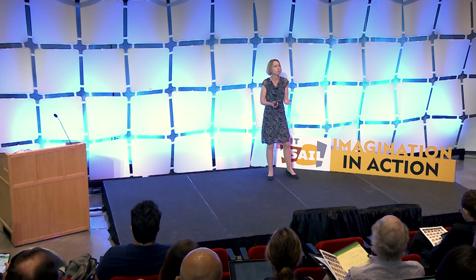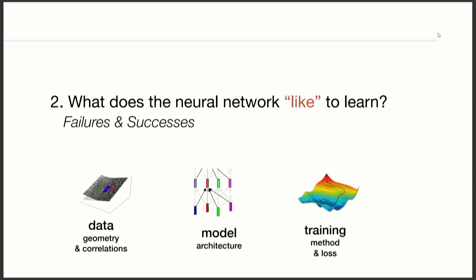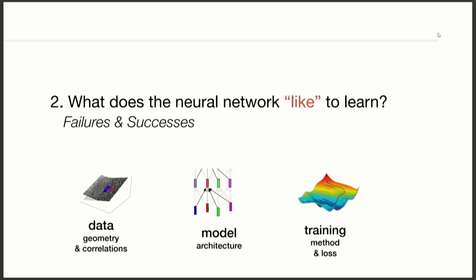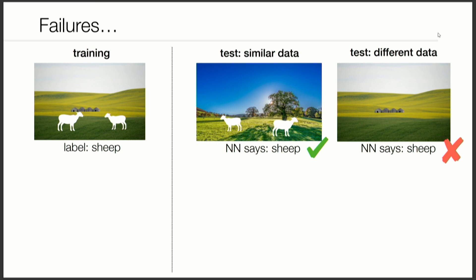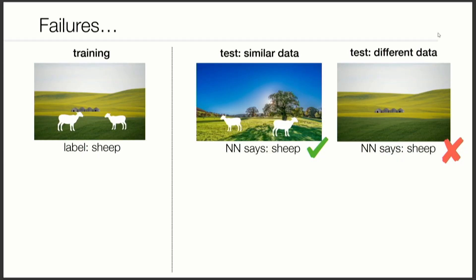We can improve by looking at what neural networks can do, but there's also the learning part — what does a neural network like to learn? That depends on the data shown to the model, the model itself, and how it's trained. Often we can understand what a neural network learns by looking at its failures. For example, if I train a network to recognize sheep always shown on grass, it may just learn that grass means sheep — and it fails on an out-of-distribution image showing only grass.